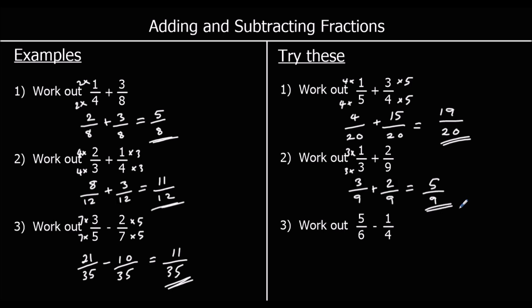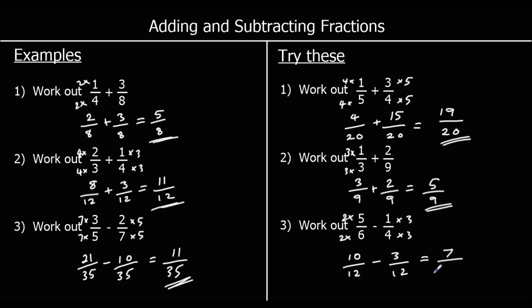For question three, the smallest number in the six times table and the four times table is twelve. So if we multiply five-sixths — top and bottom — by two, and one-quarter — top and bottom — by three, we get ten-twelfths take away three-twelfths. Ten take away three is seven, so the answer is seven-twelfths.